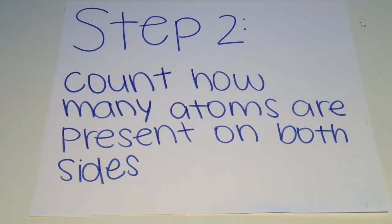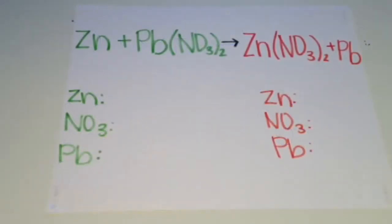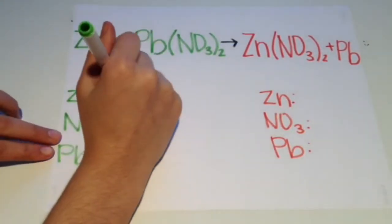Now for step 2. Count how many atoms are present on both sides of the equation. Now that we have our chemical equation, we can better visualize how many atoms are present.